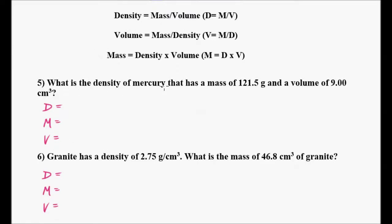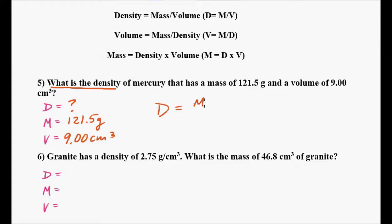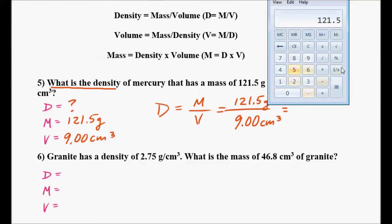What is the density of mercury that has a mass of 121.5 grams and a volume of 9 cubic centimeters? I'm looking for the density — question mark — it has a mass of 121.5 grams and a volume of 9.00 cubic centimeters. The formula is the same: density equals mass divided by volume. Always write the formula and label your units on your numbers — that's really important. So mass is 121.5 grams divided by 9.00 cubic centimeters.